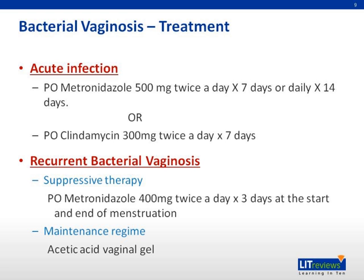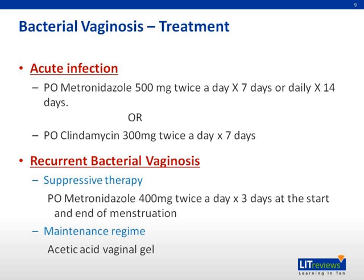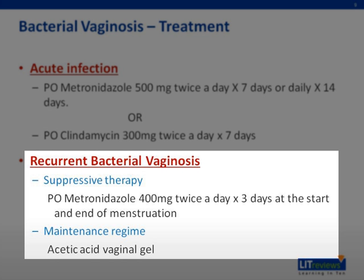All symptomatic women with bacterial vaginosis, or asymptomatic women with BV before surgical procedures, should be treated. BV can be treated with either oral metronidazole or clindamycin for seven days. Treatment in pregnancy is the same as in non-pregnant women. Overall cure rates range from 75% to 85%, and follow-up is not necessary if symptoms resolve. Recurrent BV occurs within three months of treatment in about 15% to 30% of women. Suppressive regimens may be considered, but evidence to support their effectiveness is limited. Maintenance with acetic acid vaginal gel at the time of menstruation and following unprotected sexual intercourse maintains acidic vaginal pH.